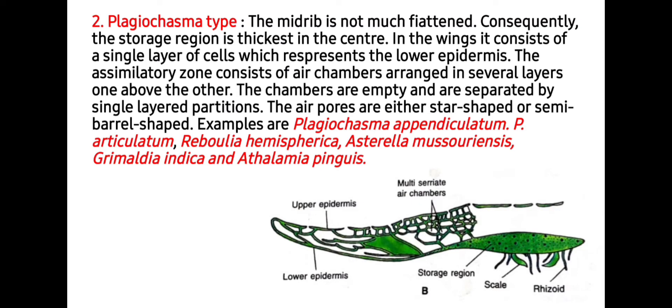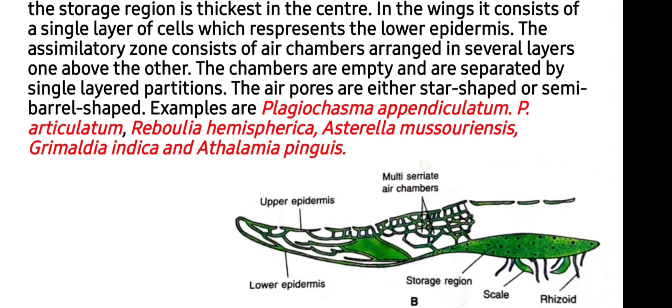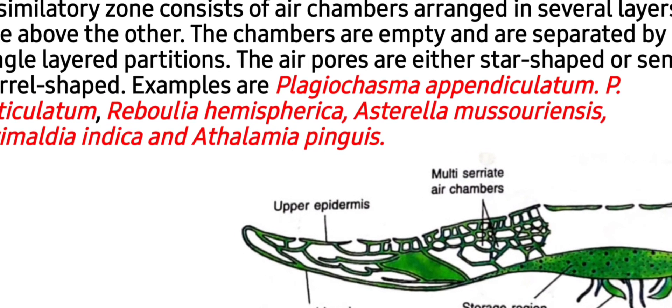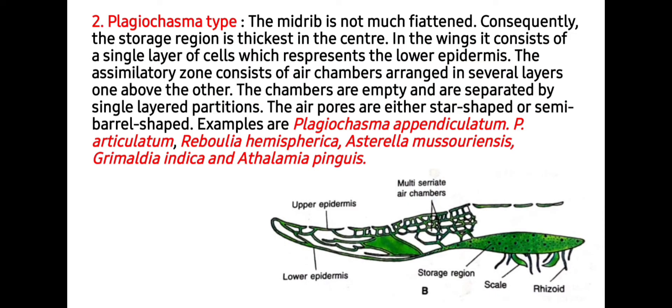The second category is Plagiochasma type. Here the midrib is not much flattened as in Marchantia. Consequently, the storage region is thickest in the center; in the wing it consists of a single layer of cells representing the lower epidermis. The assimilatory zone consists of air chambers arranged in several layers, while in Marchantia they are present in a single layer. The chambers are empty and are separated by single-layered partitions, and the air pores are either star-shaped or semi-barrel-shaped.